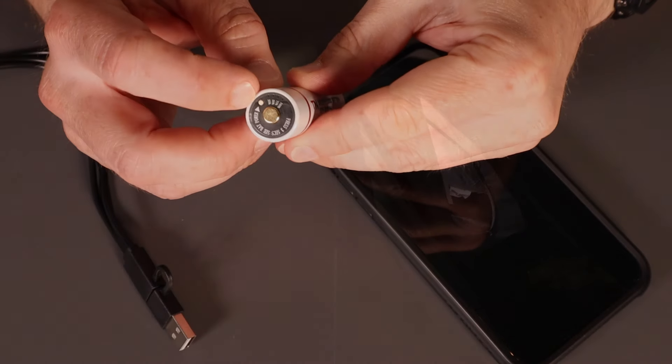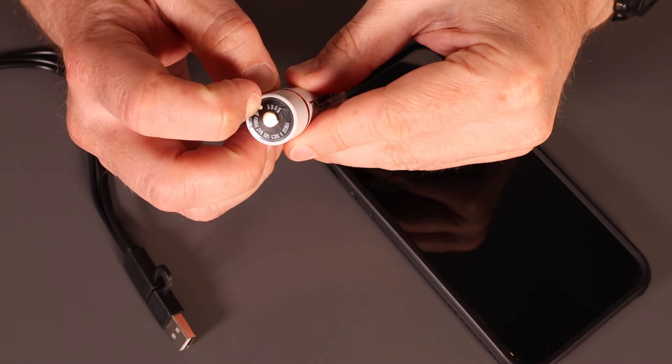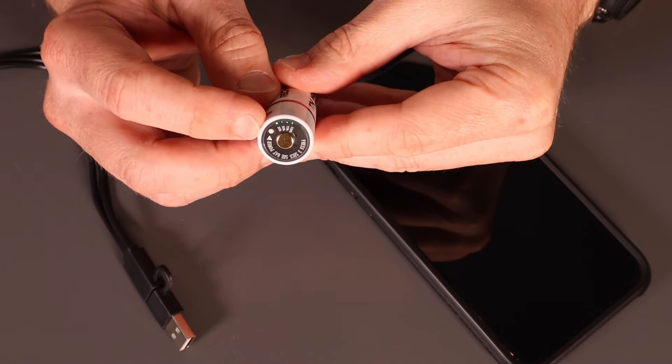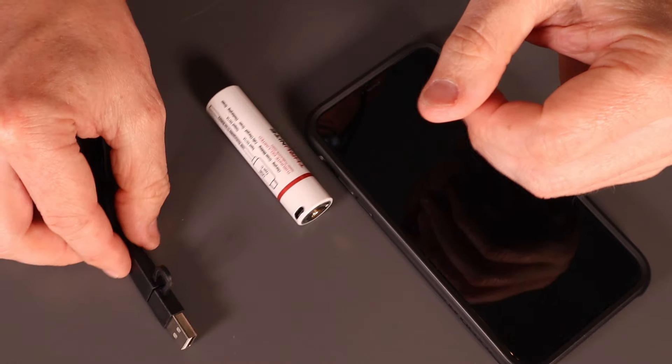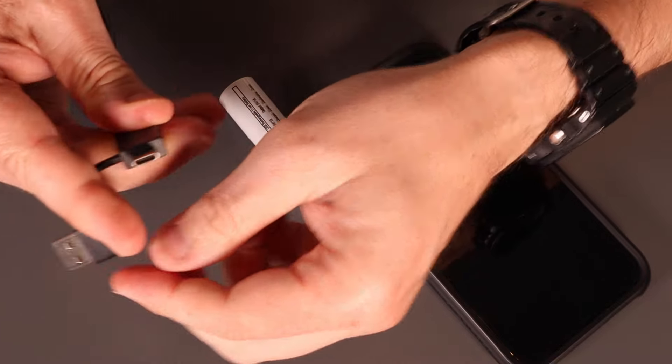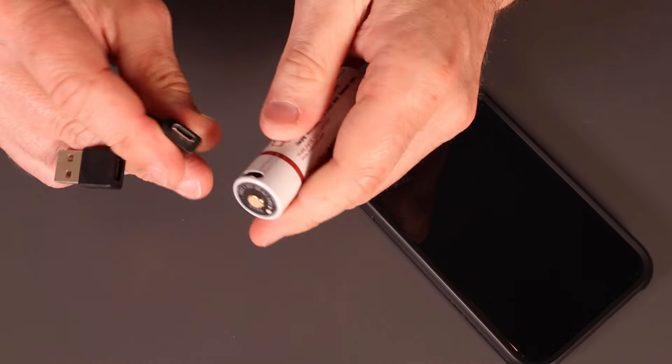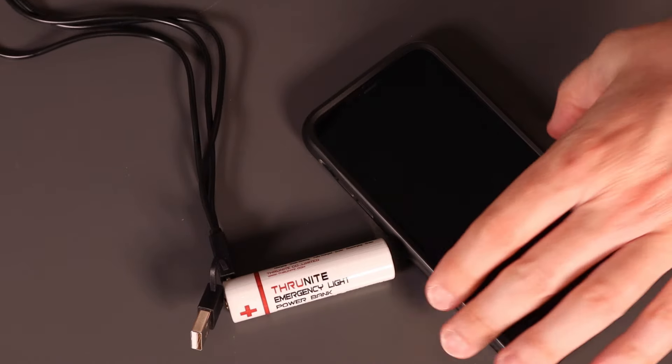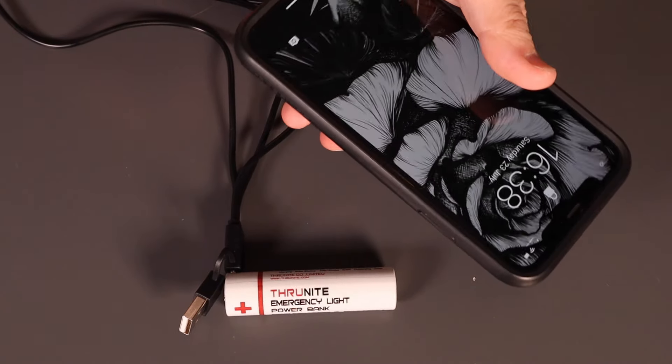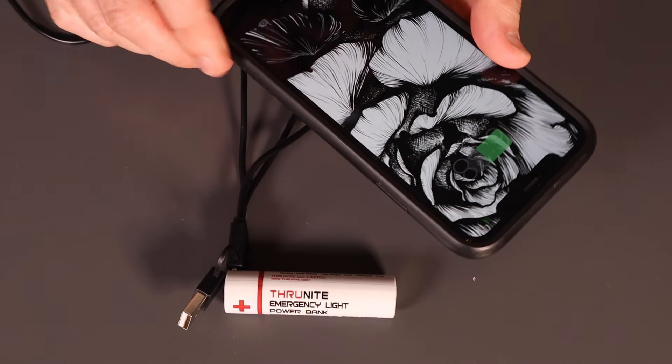And then of course you've got the power bank function. This is now freshly charged up to 100 percent. Press there and you get the readout. Use the USB-C for the port there and obviously the lightning connection for that iPhone, and away you go.